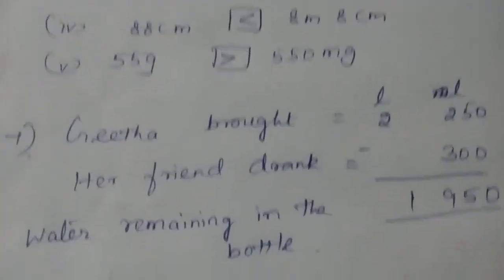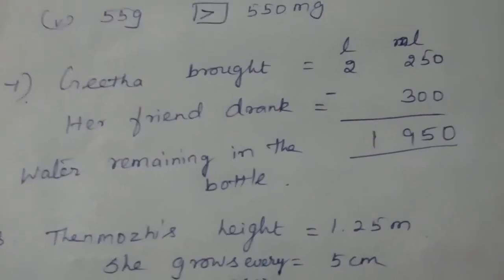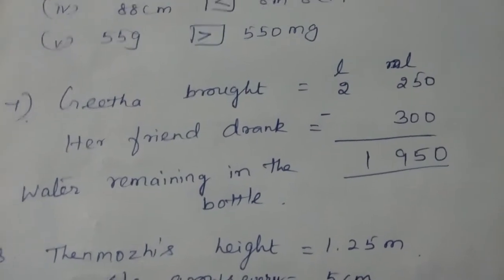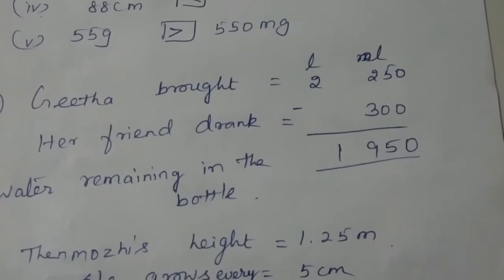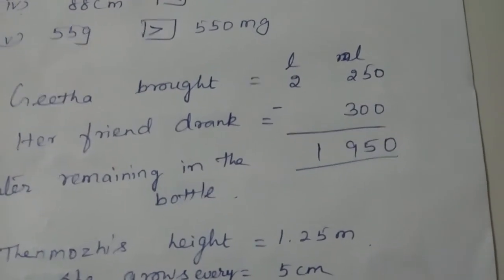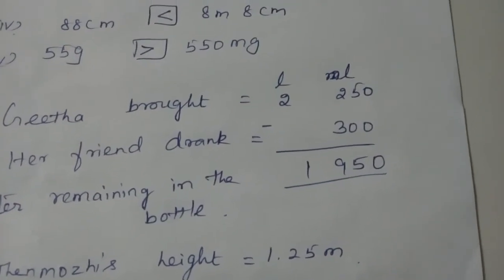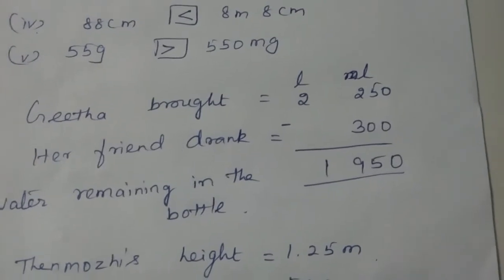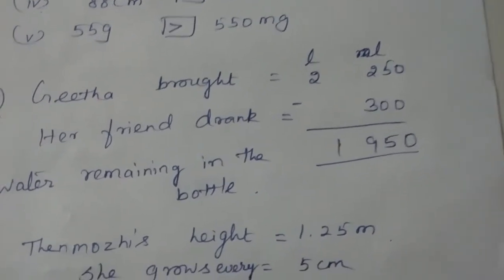Then the seventh question, let me read the question first. Geeta brought 2 liter and 250 milliliter of water in a bottle. Her friend drank 300 milliliter from it. How much water is remaining in the bottle? We have to find out what is the remaining water in the bottle.